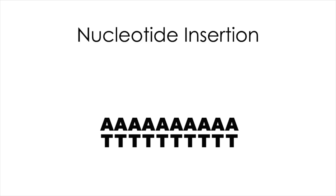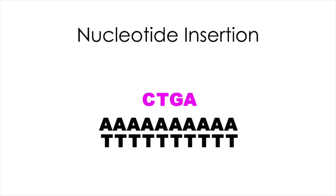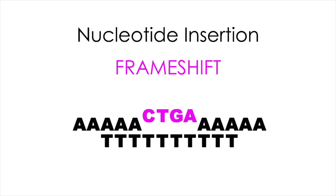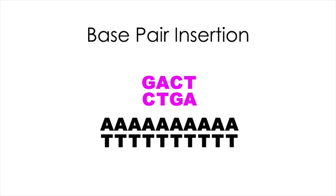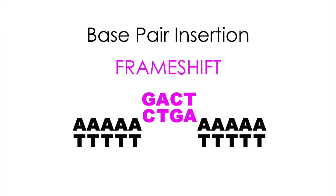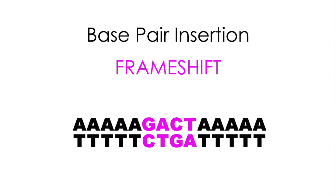A nucleotide insertion is when one or more nucleotides are added or inserted into one strand of the DNA double helix, which definitely causes a frameshift in that strand as well as the entire double helix. Base pair insertion is where one or more base pairs are inserted into the DNA double helix, which again causes a frameshift.